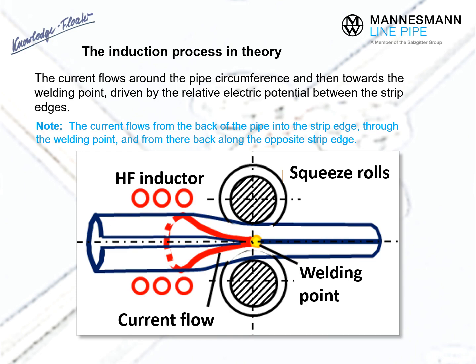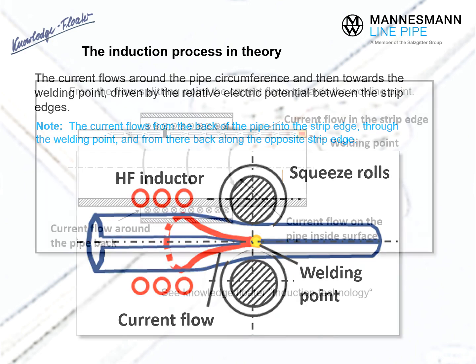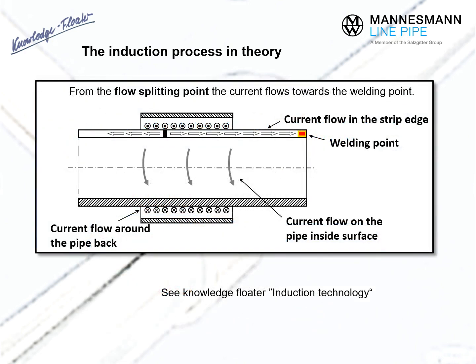The reversal point is the welding point. From the flow splitting point, the current flows to the weld. Note that the higher the frequency of the induced alternating current, the greater the density of the eddy current and the more strongly it will be forced towards the steel surface — that is, the strip edges. This phenomenon is called the skin effect.